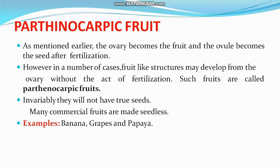Parthenocarpic fruit: the ovary becomes the fruit and the ovule becomes the seed after fertilization. However, in a number of cases, a fruit-like structure may develop from the ovary without the act of fertilization. Such a fruit is known as a parthenocarpic fruit, otherwise known as a seedless fruit. Many commercial fruits may not have true seeds.